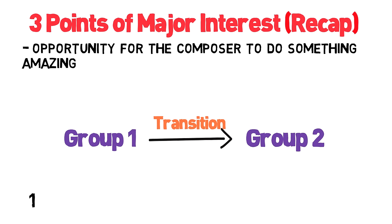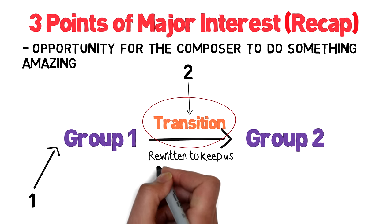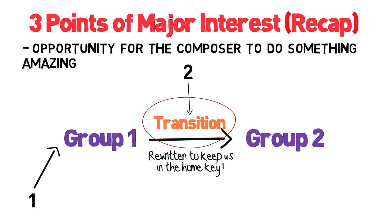First is how the development leads into the recap, which we've already looked at. The second interesting part is the transition. Whereas in the exposition the transition took us to our new key, now the composer has to rewrite this passage to keep us in the home key. The composer will often use this as an excuse to do something remarkable. Here's a bit of Mozart's redesigned dramatic transition, which takes the old transition material and runs wild with it.